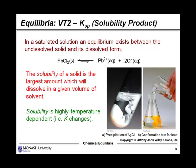So let's have a look at the equilibrium that's in place here. In a saturated solution, an equilibrium exists between any undissolved solid and its dissolved form. You can see the equilibrium expression there. In this case we've got lead chloride, PbCl2, in equilibrium with lead ions and chloride ions. You can see the stoichiometry there, and the stoichiometry as we know in equilibria is important. One mole gives one mole of lead ions and two moles of chloride ions. The solubility of a solid is the largest amount which will dissolve in a given volume of solvent, and solubility is highly temperature dependent. If the temperature changes, then the actual value of Ksp changes.